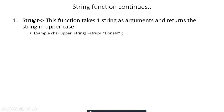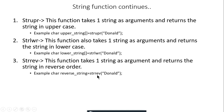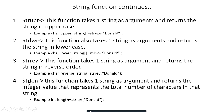strupr takes a string argument and returns it in uppercase. strlwr works the same way — just replace 'upr' with 'lwr' and it converts the string to lowercase. strrev reverses the string; for example, 'Donald' would be printed as 'dlanod' in reverse order.